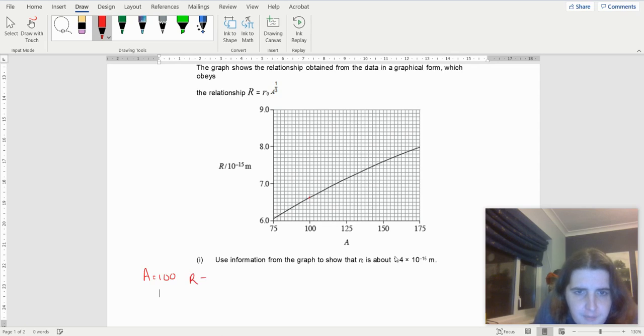R equals 6.6 × 10⁻¹⁵. I'll take another point here. I've got 1, 2, 5 here.